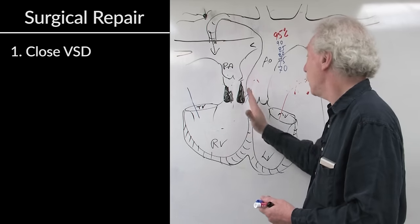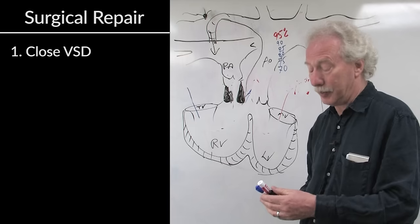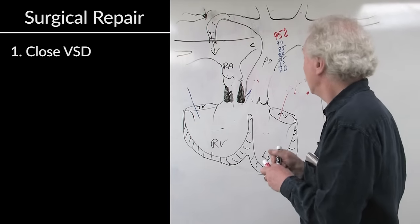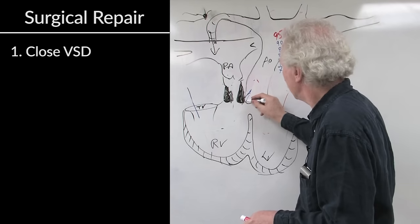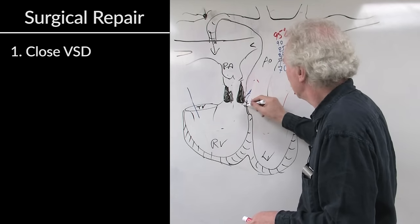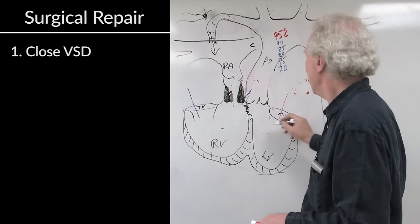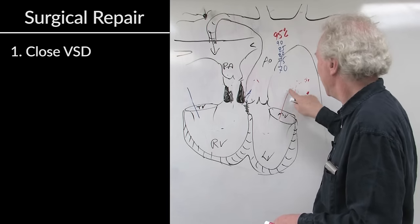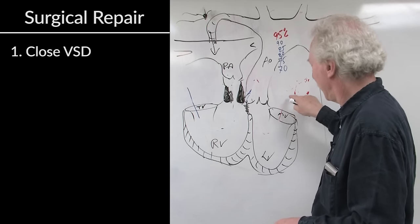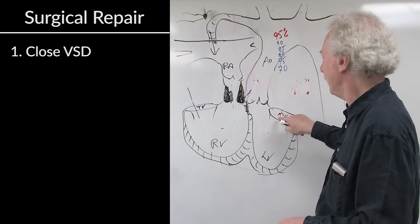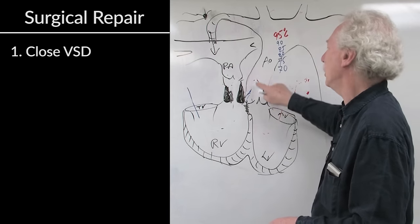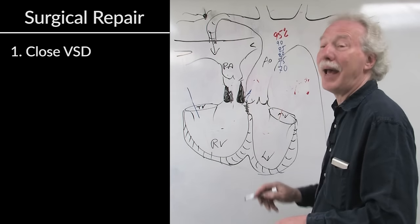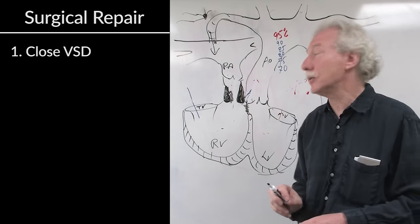We've got to do a couple of things to fix. Number one is, we would like to close the ventricular septal defect. A patch can be placed which will leave left ventricular inflow coming from the pulmonary veins, left atrium, mitral valve, left ventricle, going to the aorta. Put a patch there, it can't go anywhere else.